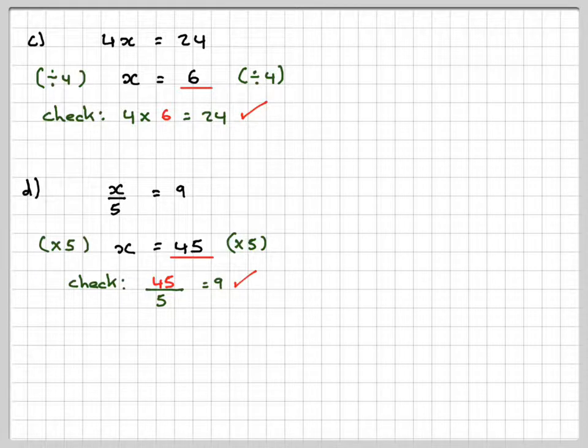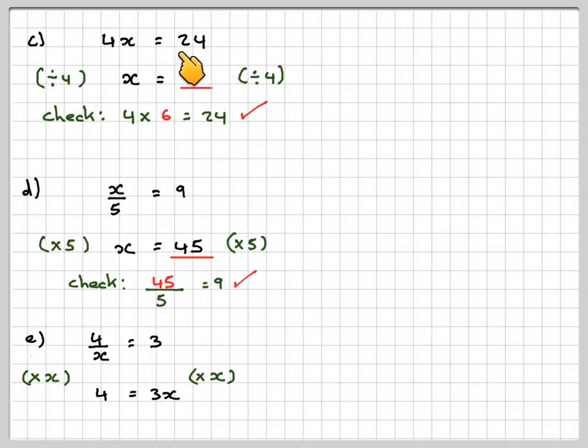And finally, 4 divided by x equals 3. Now what makes this difficult is that the x is in the denominator. So to avoid that, if we multiply both sides by x, this side will just get 4 and this side will get 3x. That's similar to that equation up there. So dividing both sides by 3, we get x equals 4 over 3, and it's okay to leave this as an improper number or 1 and 1 third.